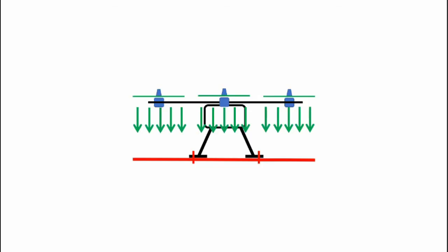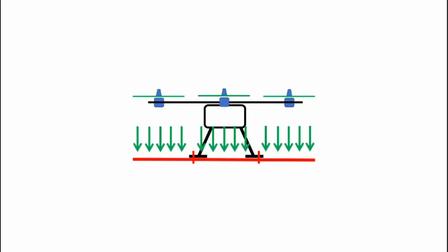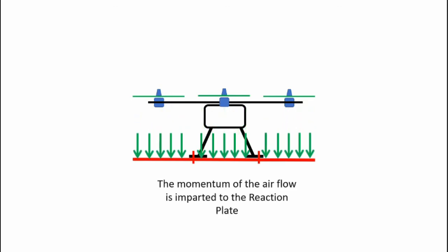Let's go back to my graphic to see what's going on. Here I have my drone and the propellers are imparting momentum to the airflow. The airflow is moving downwards and it's striking the reaction plate. So that momentum is being transferred directly back into the drone system itself.